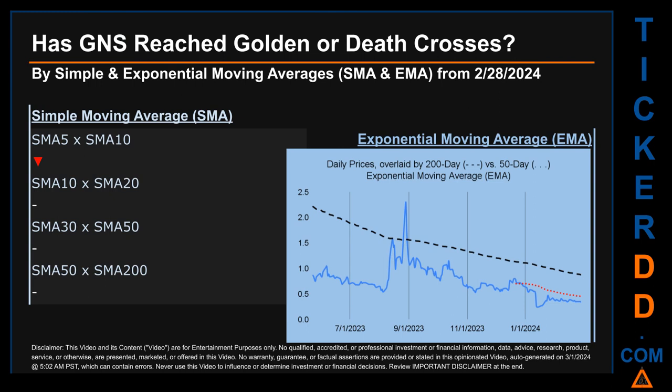Has GNS price reached golden or death crosses? Golden cross and death cross are basic signals that compare average prices across two specified trade-day ranges — a short-term versus a long-term range, for example five-day versus ten trade days. A golden cross is a bullish signal that appears when a ticker's short-term moving average crosses above its long-term average. Vice versa, a death cross is a bearish signal when the short-term crosses below its long-term moving average. For our analysis, we looked at both simple moving average (SMA) and exponential moving average (EMA), the latter giving more weighting to recent prices.